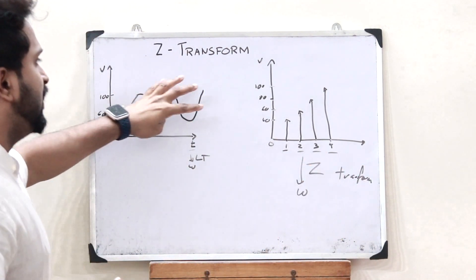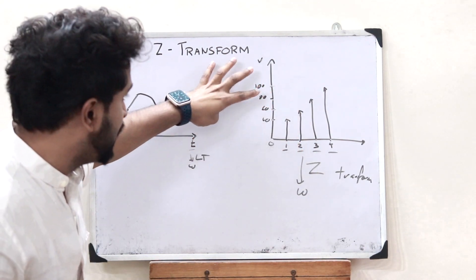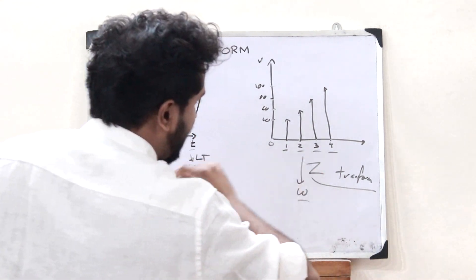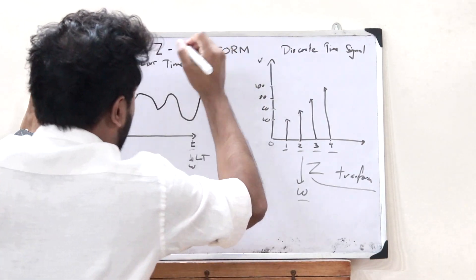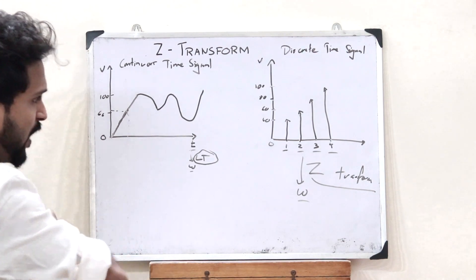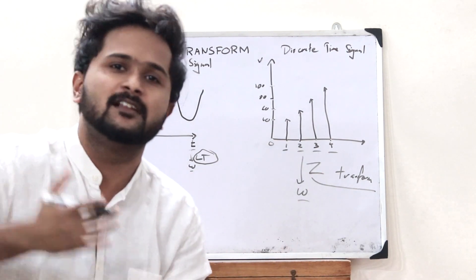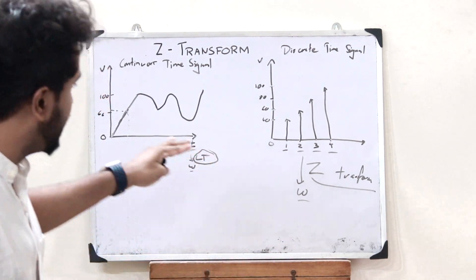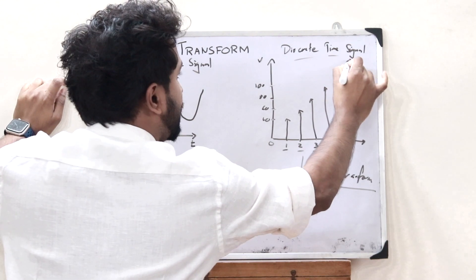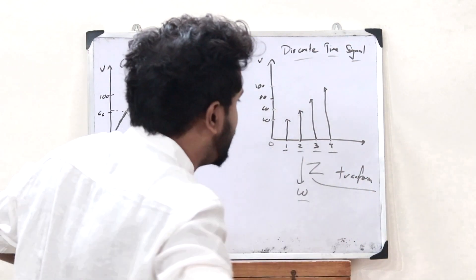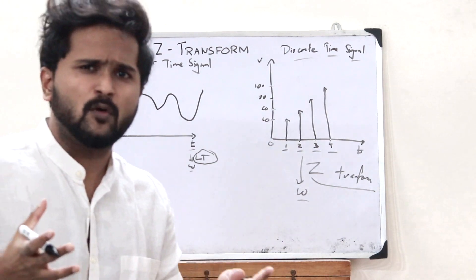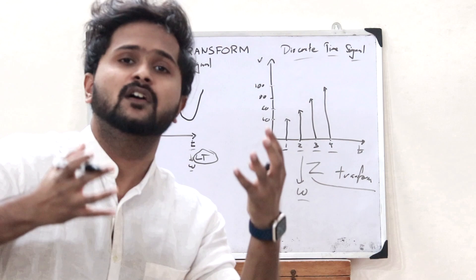If we have a discrete time signal and need to convert it from the time domain onto the frequency domain, we use the Z-transform. But if we had to convert a continuous time signal from the time domain to the frequency domain, that is when we used the Laplace transform. Up through module 5, we used continuous time signals and hence the Laplace transform. Now we are going to deal with discrete time signals and hence we use the Z-transform.